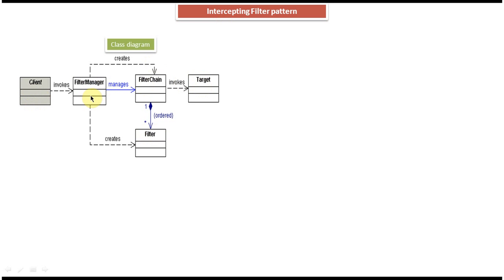The client invokes the filter manager, and the main work of the filter manager is it manages the filter processing. What it does is it creates the filter chain, creates different kinds of filters, adds those filters into the filter chain, and initiates the filter processing. Then the filter chain gets the collection of filters set by the filter manager, iterates through each filter, and executes each filter in the proper order. Once it executes all the filters, it invokes the target object.